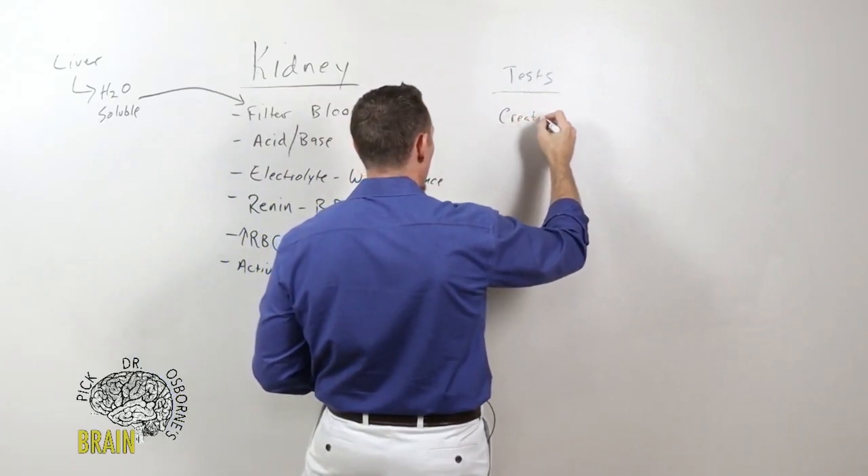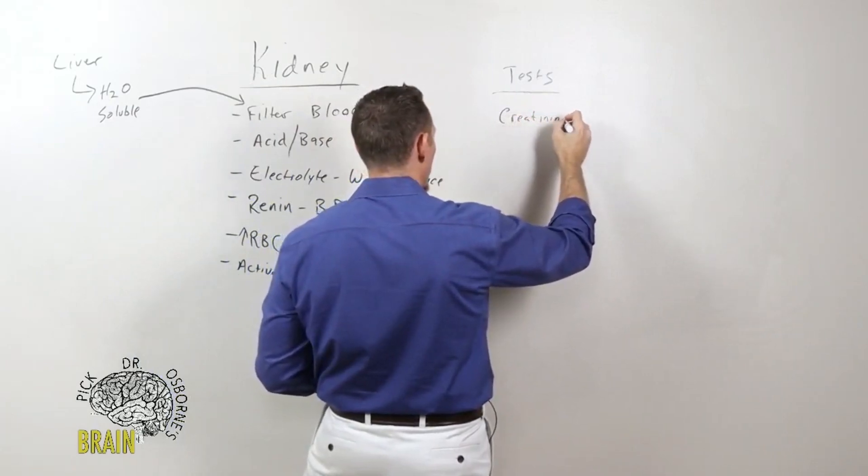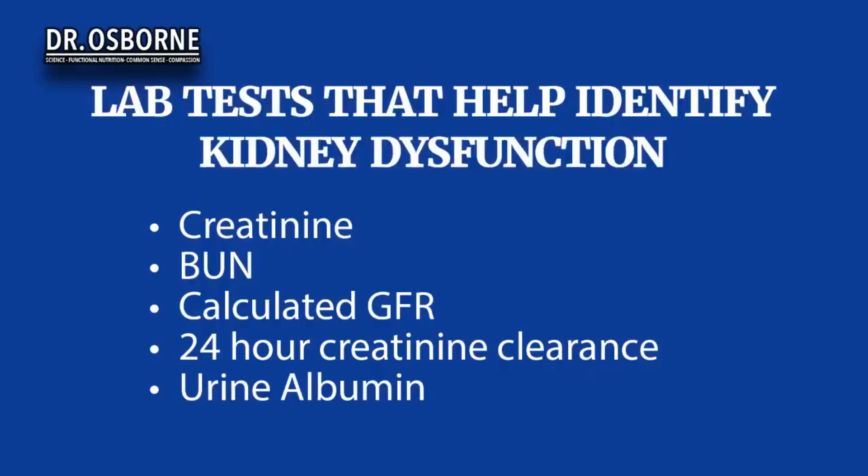One of the main tests is called creatinine—not creatine like the nutritional supplement for people who try to build muscle. Creatinine is a blood marker measuring how well your kidneys are filtering this breakdown product of your muscles. Your kidneys are supposed to filter that out, so creatinine is one marker in the blood. There's another one called blood urea nitrogen, or BUN for short. It's also a blood test that helps doctors understand whether your kidneys are functioning adequately or starting to fail.